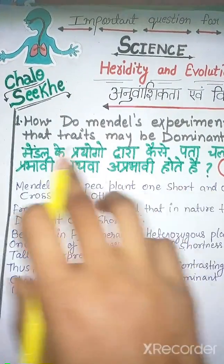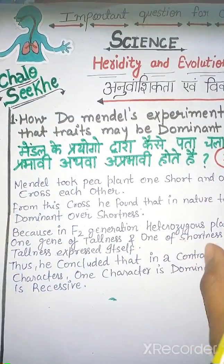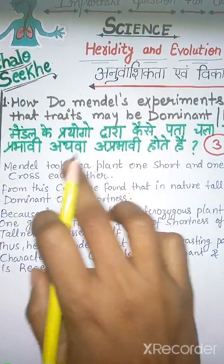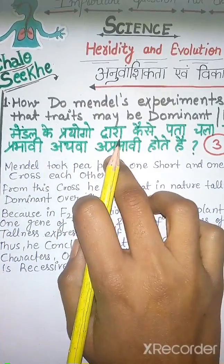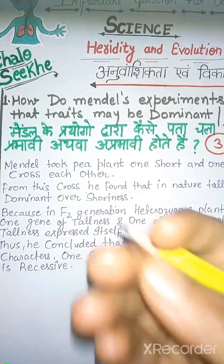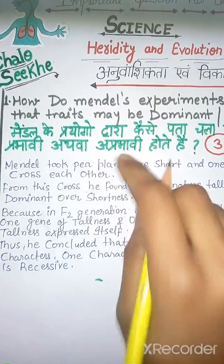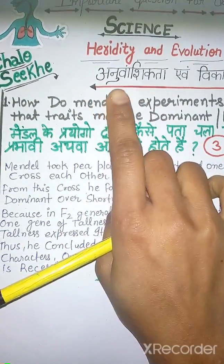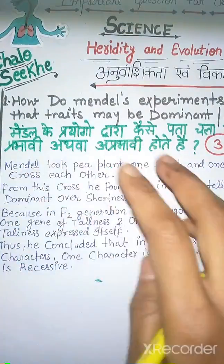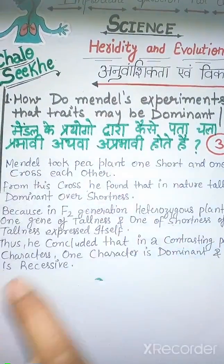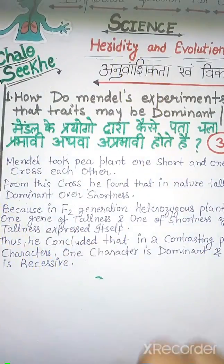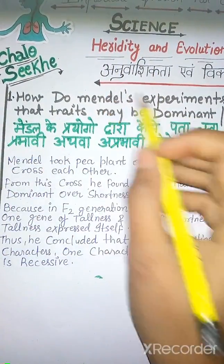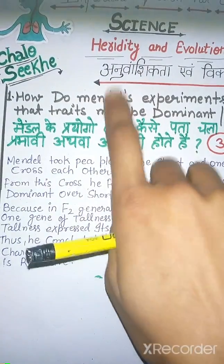Mendel experimented to show how characters are either dominant or recessive. A dominant character will be expressed while the recessive one will not. He experimented with tall and dwarf pea plants. Note: don't confuse Mendel and Mendeleev — Mendeleev invented the periodic table based on atomic mass, while Mendel was a geneticist.